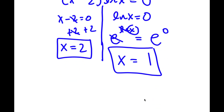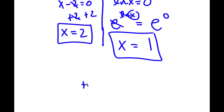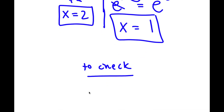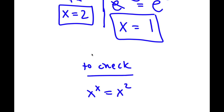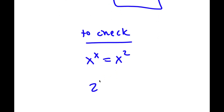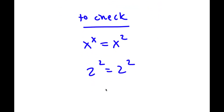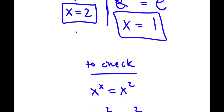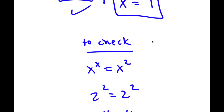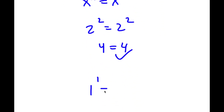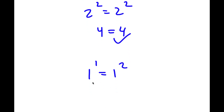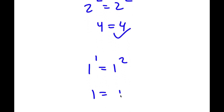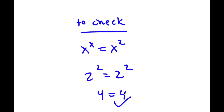So those are my two solutions. Now to check: I had x to the power of x equals x to the power of 2. If x equals 2, I have 2 to the power of 2 equals 2 to the power of 2, meaning 4 equals 4 — so x equals 2 is correct. If x equals 1, I have 1 to the power of 1 equals 1 to the power of 2, which is 1 equals 1 — so this is right as well.